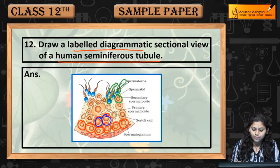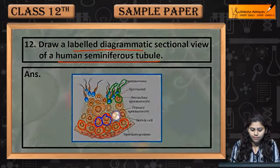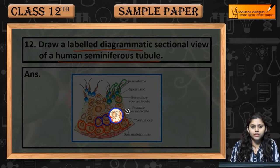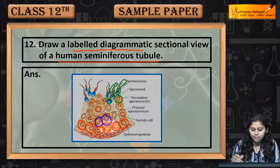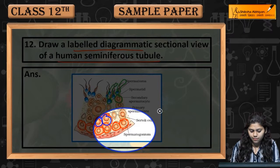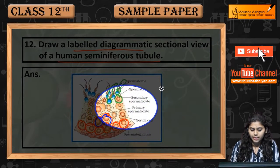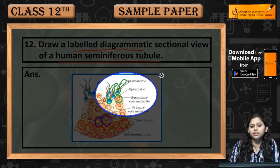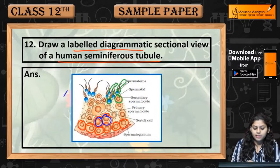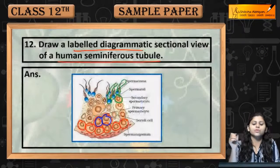Let me show you the Sertoli cells — these are Sertoli cells. Spermatogonium, primary spermatocyte, secondary spermatocyte, spermatozoa, and spermatids. This is the sectional view of the human seminiferous tubule. This was question number 12.